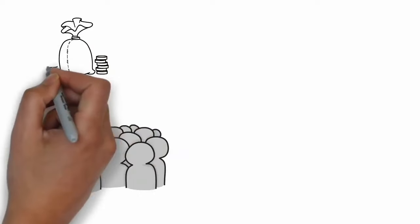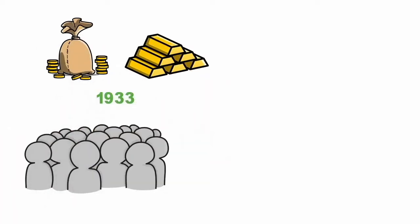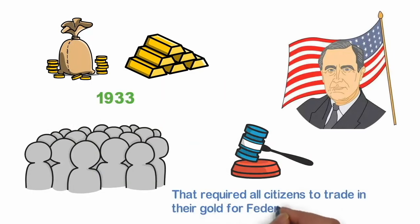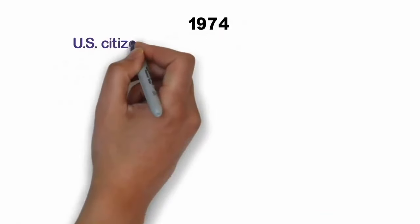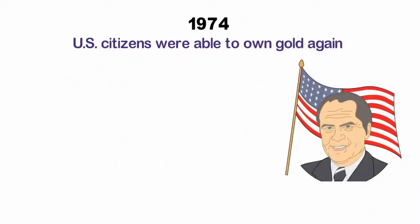Private individuals could also hold gold in the form of coins or bullion without restriction until 1933, when President Franklin Delano Roosevelt issued an executive order that required all citizens to trade in their gold for Federal Reserve notes. It wasn't until 1974 that US citizens were able to own gold again, thanks to an executive order from President Gerald Ford.